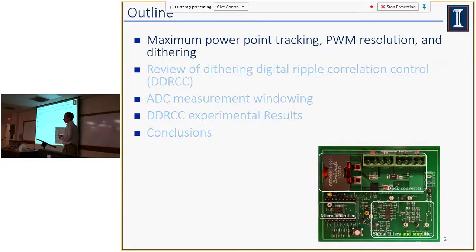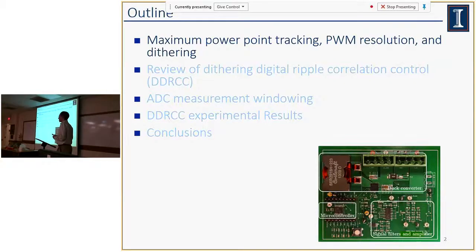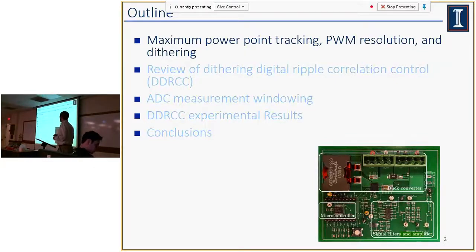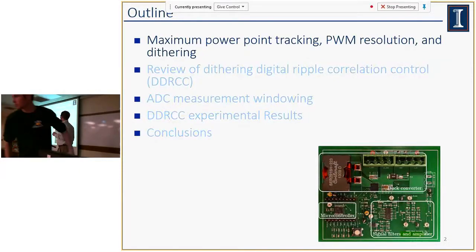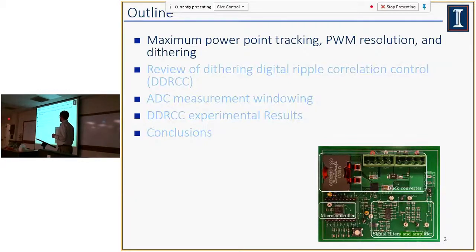A very quick review of what PV maximum power point tracking is, and more specifically how PWM resolution affects our maximum power point tracking capability. I'm going to review the dithering digital ripple correlation control, which I've talked about previously and is based on Professor Crane's work. Then I'll talk about how we use a windowed ADC measurement technique, and finally show some impressive results.